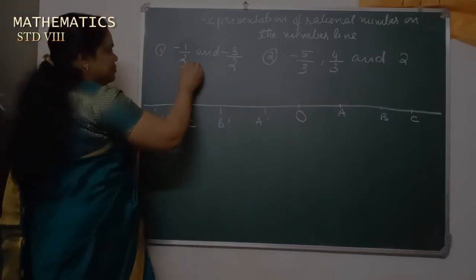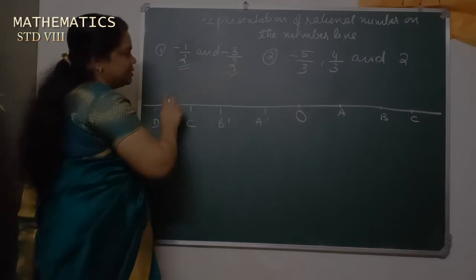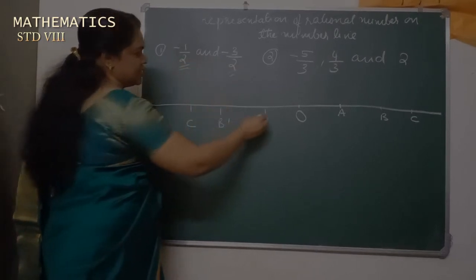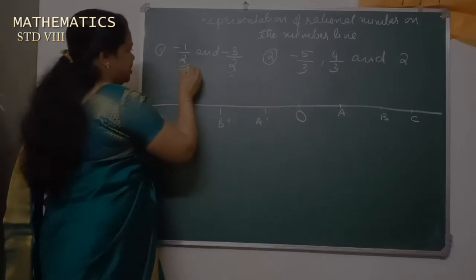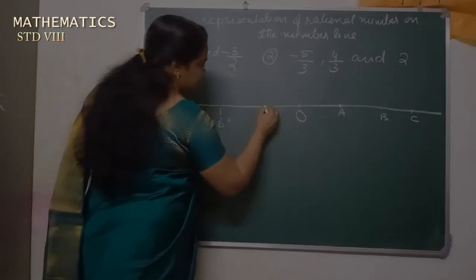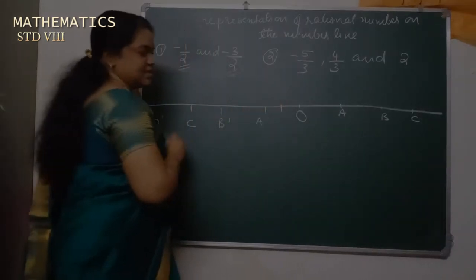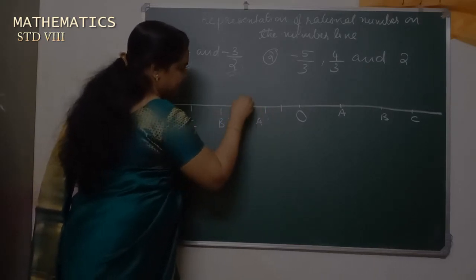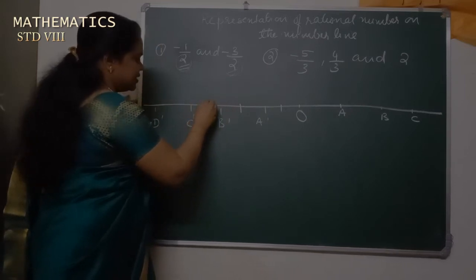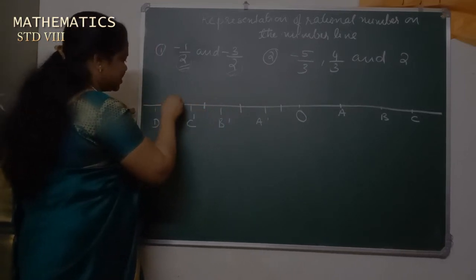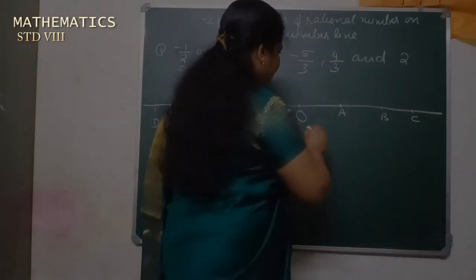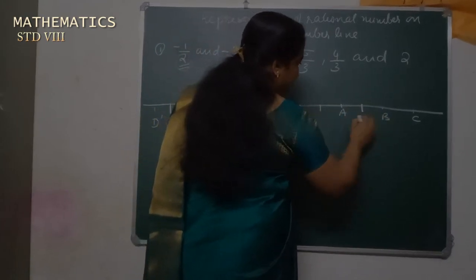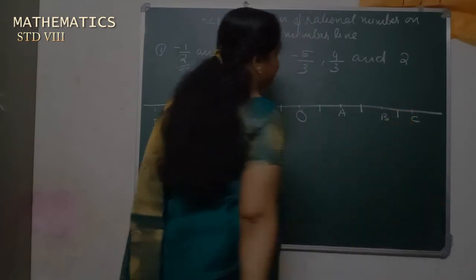The denominator is important. Here the denominator is 2. With this denominator, we divide the distance from O to A, A to B, and B to C into 2 equal parts. Similarly, on the left side, we divide A dash to B dash, B dash to C dash, and so on into 2 equal parts.